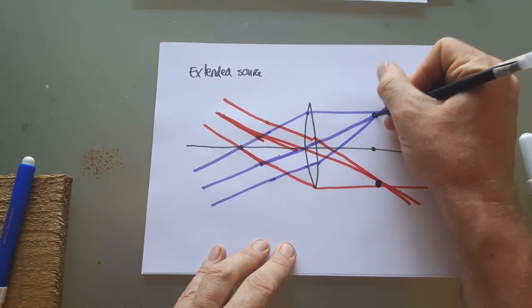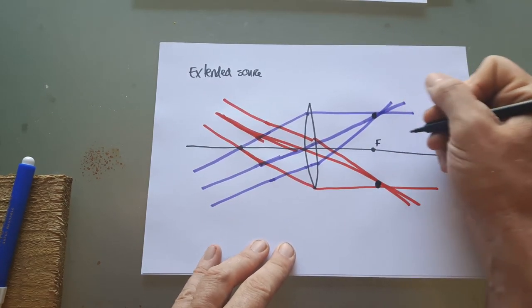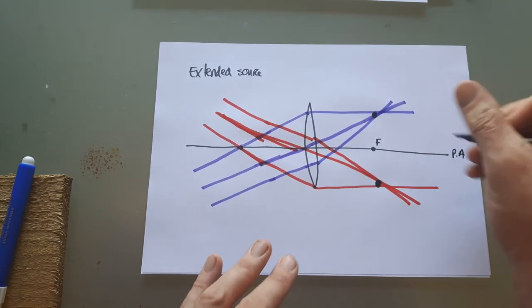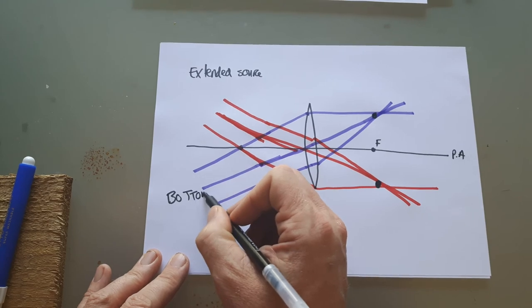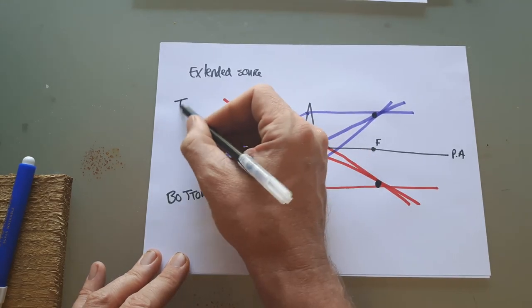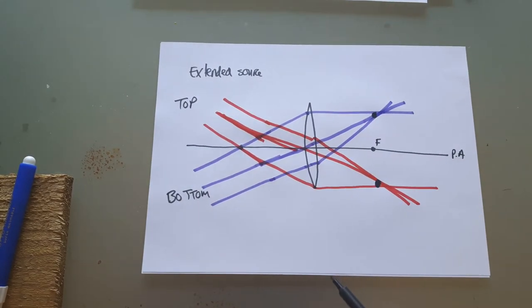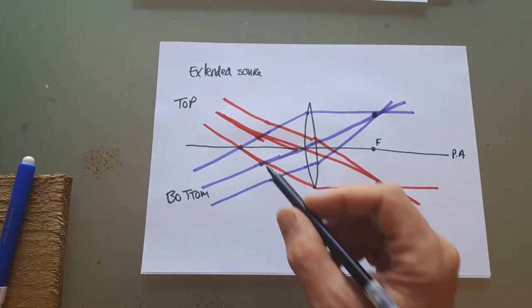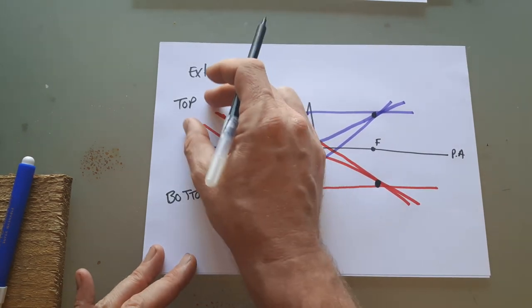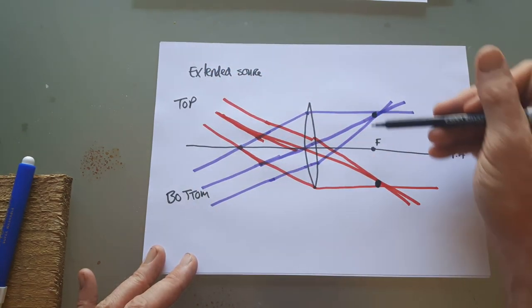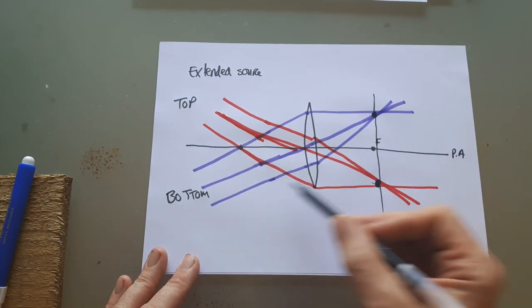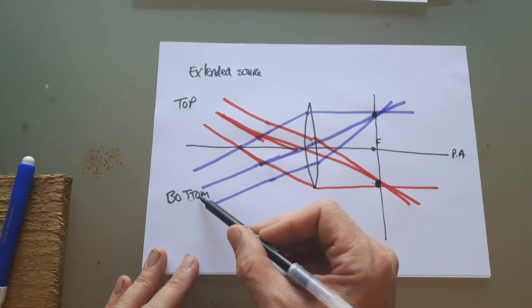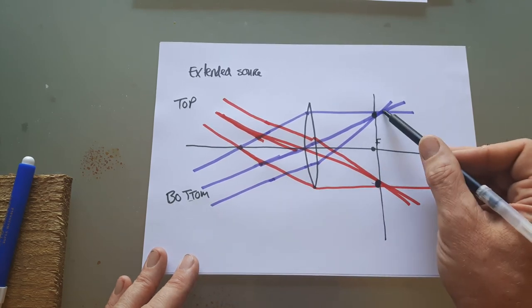So again, they should all join together above or below the focal point. These come from the bottom of the object as you look at it in the night sky, so the bottom of the moon. These come from the top. What we need to see here is the points of the rays that come from the top in the image, if we've got a screen here where we get an image, you can see they're now at the bottom, and those things that come from the bottom of the object are now at the top.